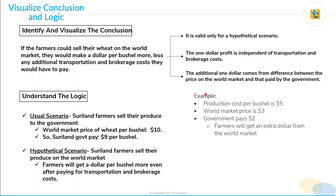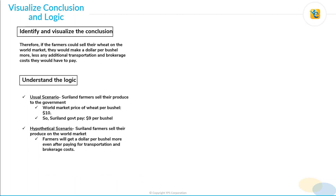We already know the logic based on which this conclusion has been derived. The usual scenario is that the Suriland farmers sell their produce to the government — if world market price per bushel is $10, then Suriland government pays $9 per bushel. The hypothetical scenario is that Suriland farmers sell their produce on the world market, and in that case it has been concluded that farmers will get a dollar per bushel more even after paying for transportation and brokerage costs. With that, let's move to pre-thinking.